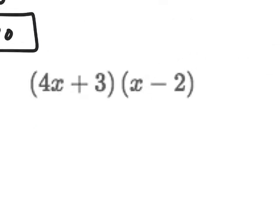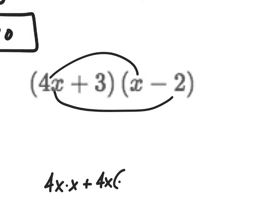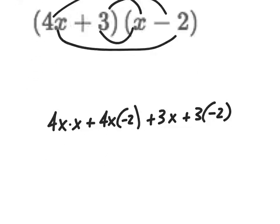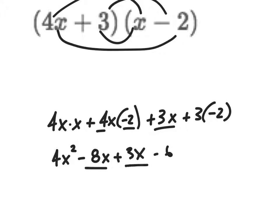Using FOIL on four x plus three times x minus two: First — four x times x gives four x squared. Outside — four x times negative two gives minus eight x. Inside — three times x gives plus three x. Last — three times negative two gives minus six. Combining: four x squared minus five x minus six. Same answer.